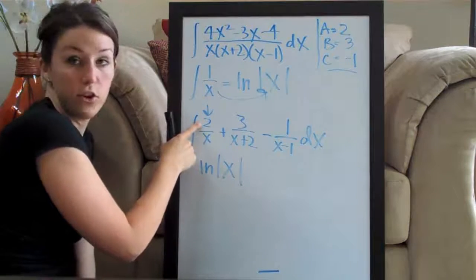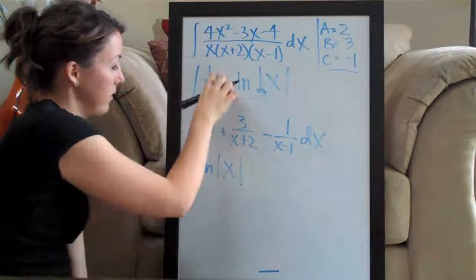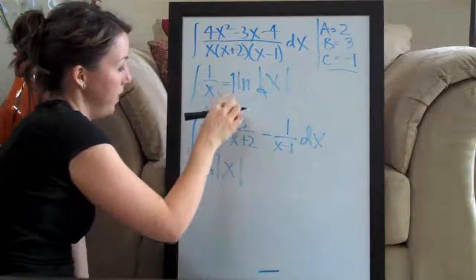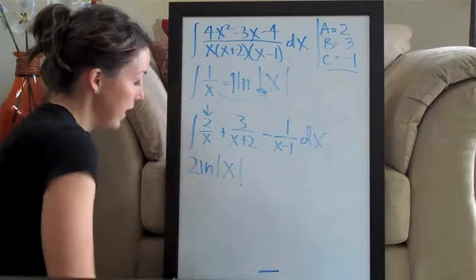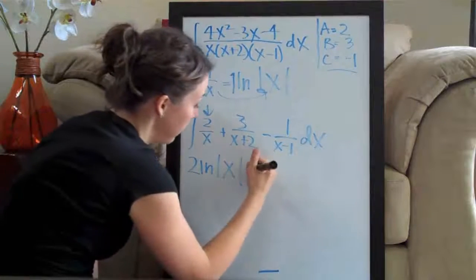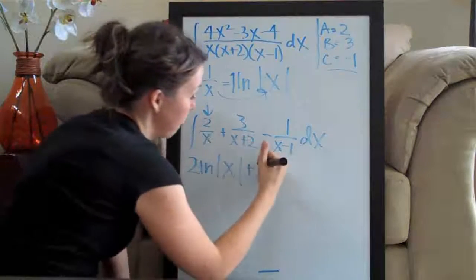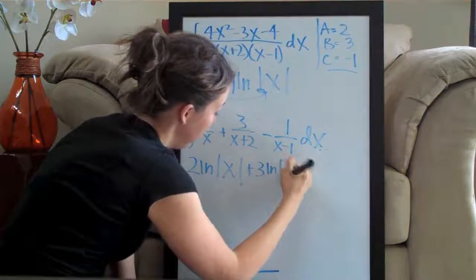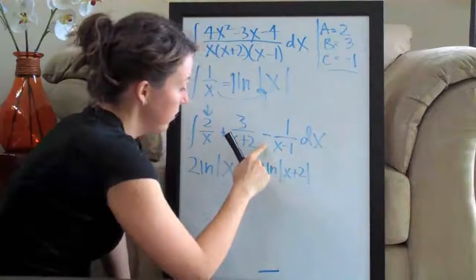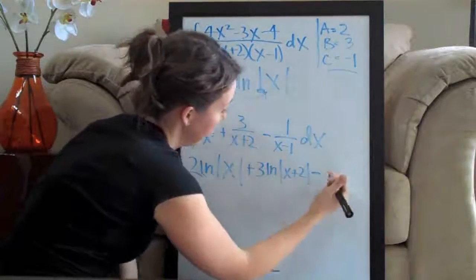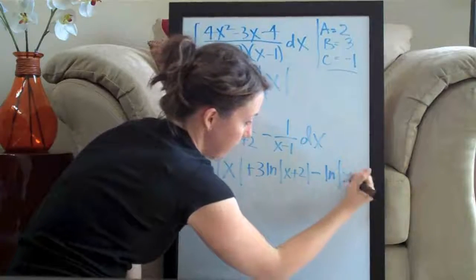And then, because this is 2, 2 is multiplied out here in front instead of just 1. That 1 is actually implied right there. So, we've got our 2 in front. So, 2 natural log absolute value of x plus. And then, you can see this here is going to be 3 times ln of the absolute value of x plus 2. And then, this, don't forget minus sign here. We're going to have minus ln of the absolute value of x minus 1.